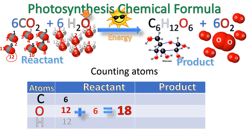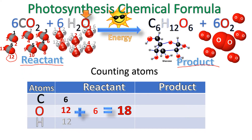Now we're going to move on to the product side. Remember, this is the reactant side. The reactant side means if I put things together, I'm going to get my product. Just like in math, one plus two equals three — and three is the product. So let's go ahead and add these up and see how they balance out.